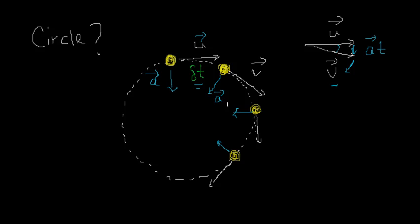Because of this regular change — it is because of this regular change — that we can actually expect to get a circular motion in the end. Now, my description so far is quite qualitative, but without going to a proper mathematical proof of this, I'm going to jump straight to a real-life example to show you that the final path of the particle is really a circle.